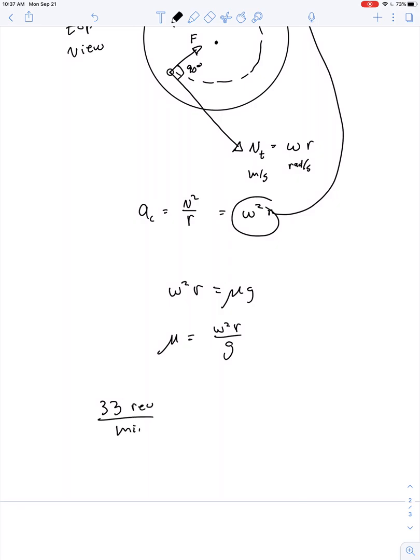33 revolutions per minute. We want to change that to radians per second. So let's get rid of revolutions and change it into radians. There are 6.28 radians in every revolution. And let's also cancel out minutes and change it to seconds. There are 60 seconds in every minute. So we'll be left with radians per second. So if we do 33 times 6.28 and divide that by 60, we can convert this to about 3.45 radians per second.